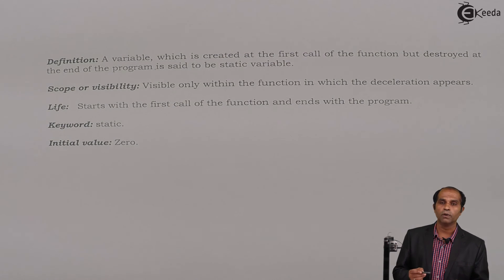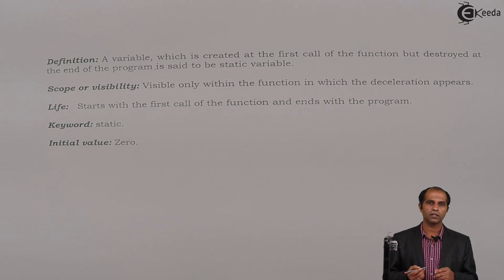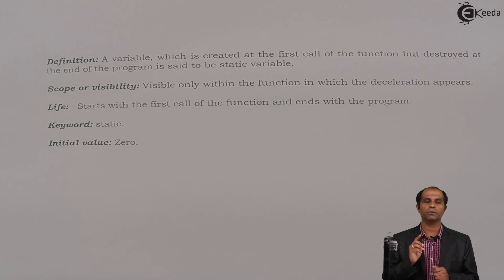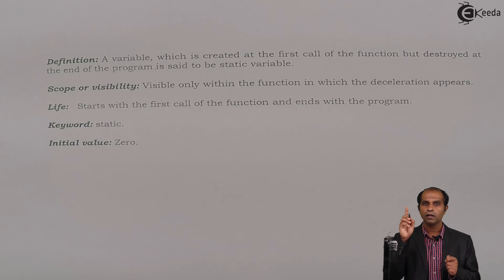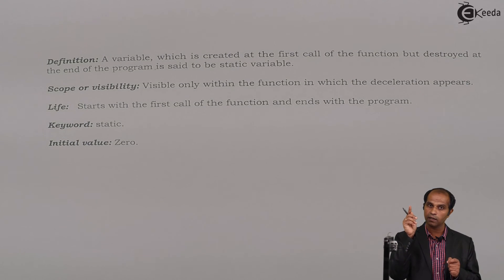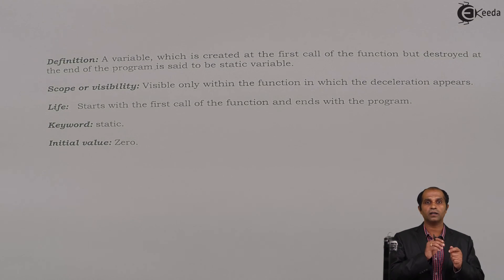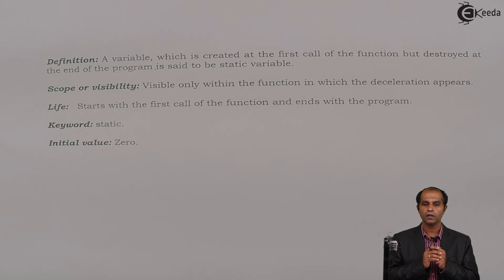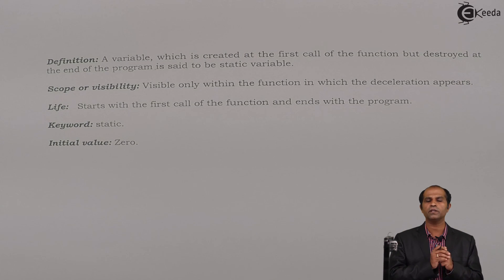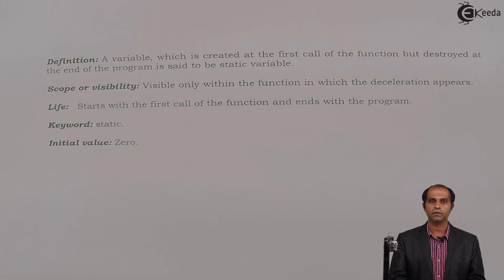Scope or visibility: visible only within the function in which the declaration appears. Life: starts with the first call to the function and ends with the program. Static int A was declared, so it was created only once and its life remained until the end of the program — at program end the variable is destroyed. The keyword used is static. If A had not been set to 1, A would have started with 0. That is about the concepts of static variables. Thank you.